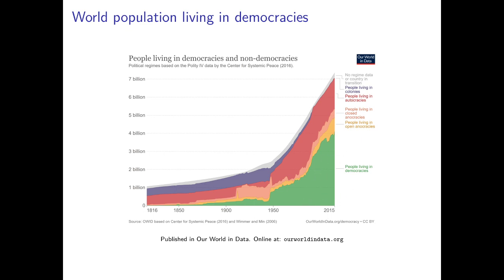Green is democracy, and at the beginning of the 19th century virtually nobody in the world lived in a democracy — almost everybody lived in absolutist monarchies or dictatorships. Over the 19th century, slowly but steadily the number of people living in democracies started to increase, but only since the First and Second World War did this number really increase tremendously, to about 4 billion people — more than half of the population — by 2015. That has huge well-being implications, and I would say it's one of the most important developments in history.